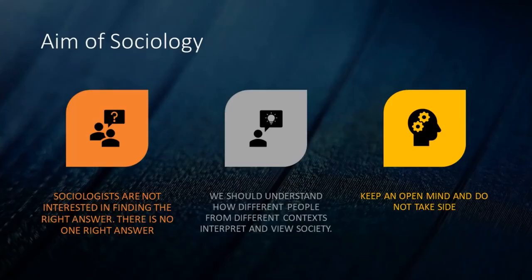By now, as students of sociology, you should also understand what the aim of sociology is. Sociologists are not interested in finding right answers — as you understand, there is no right answer in the world. There are different ways of looking at the same thing. We should understand how different people from different contexts and different groups interpret and view society, and therefore we should always keep an open mind and not take sides.